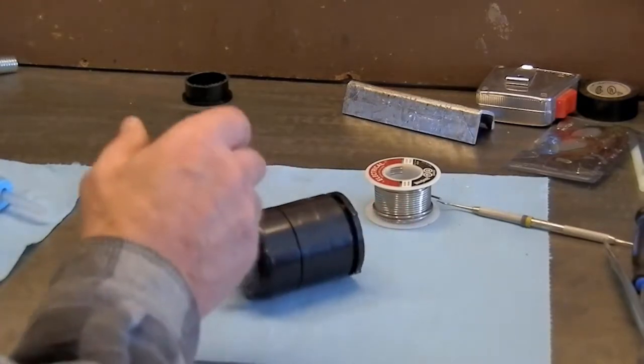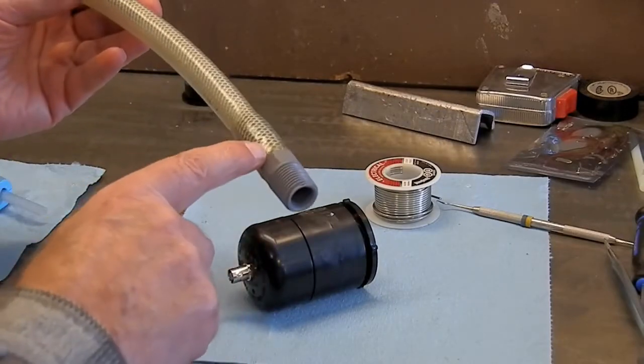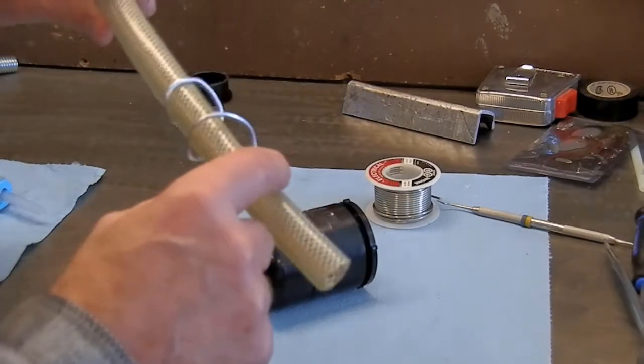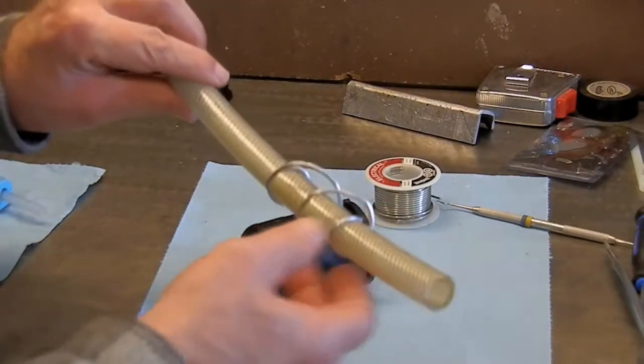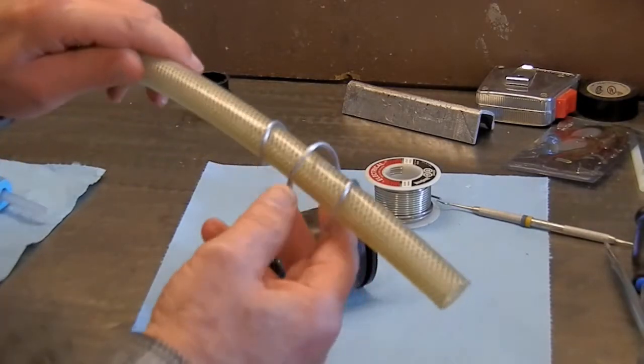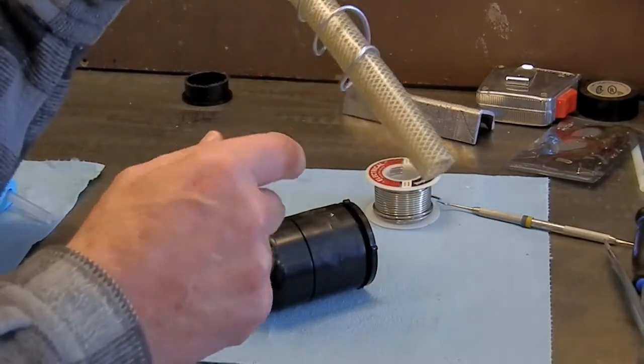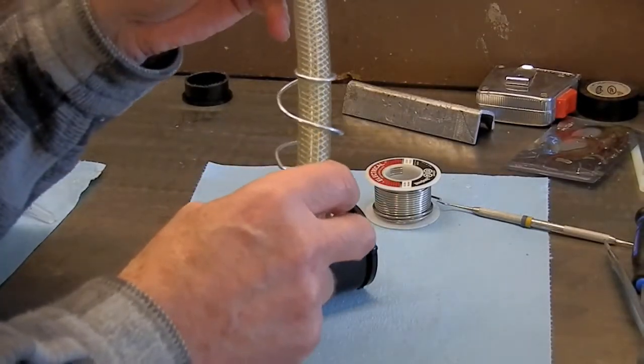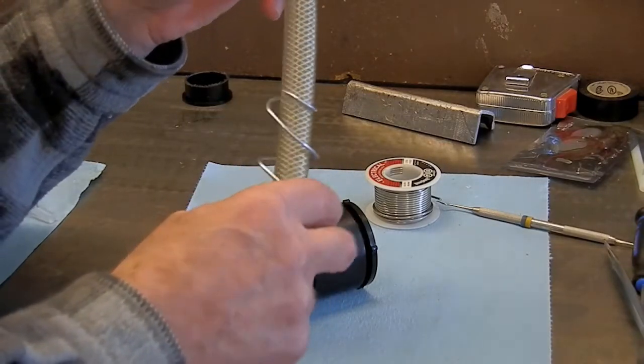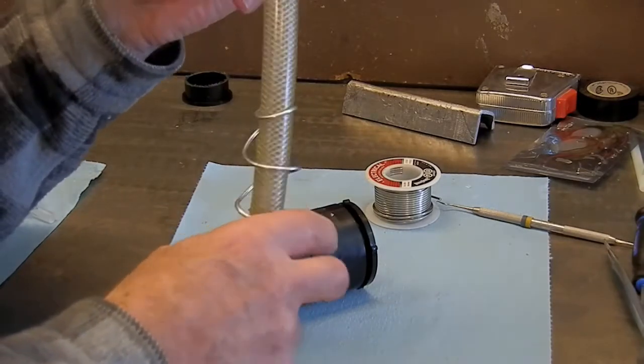I prepared the hose that will go into the exhaust pipe. On one end is a barbed adapter, half inch thread. This is a piece of wire that is going to suspend the hose from making contact to the hot exhaust pipe. As a point of interest, this is the handle that I pulled out from my paint can smoke machine, so we don't waste anything on this channel.